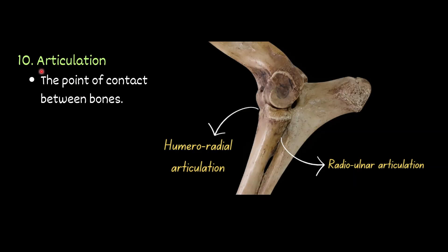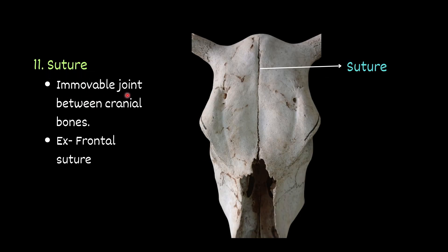Articulation — the point of contact between bones. For example, the radio-ulnar articulation between the radius and ulna, and the humeroradial articulation between the distal end of the humerus and the proximal end of the radius. Then suture — an immovable joint between cranial bones. For example, the frontal suture; these two are the cranial bones and this is the suture, called the frontal suture.